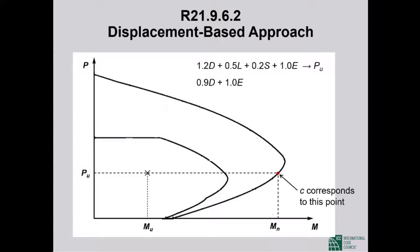We are required to calculate the neutral axis depth for P sub U paired with the corresponding nominal moment strength at the critical shear wall section at the base — not for the factored moment M sub U. If this neutral axis depth under P sub U and the nominal moment strength exceeds the critical neutral axis depth, specially detailed boundary elements are triggered.